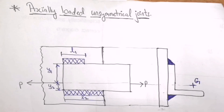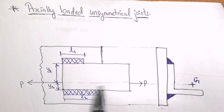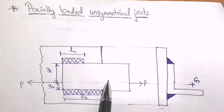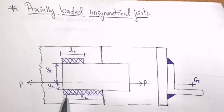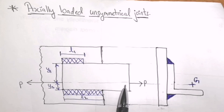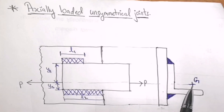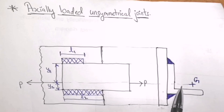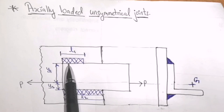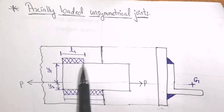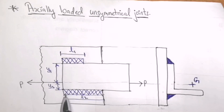As seen in the given diagram, this angle has been welded on the plate by means of two parallel fillet welds. On the top side, the length of the weld is L1, and on the bottom side, the length of the weld is L2. A tensile load has been applied on the plate through the center of gravity. Let the weld of length L1 lie at a distance of Y1 from CG, and the other weld lie at a distance of Y2 from CG.